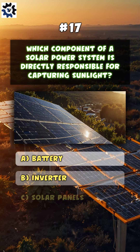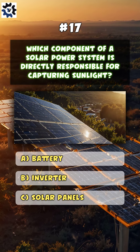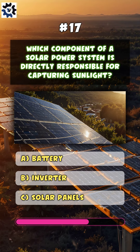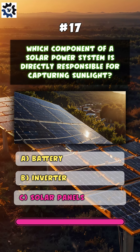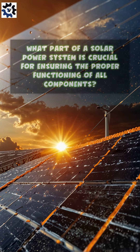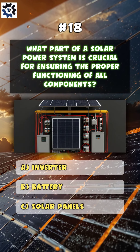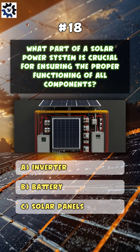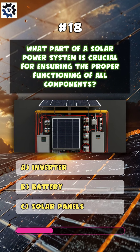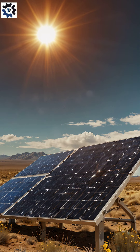Which component of a solar power system is directly responsible for capturing sunlight? What part of a solar power system is crucial for ensuring the proper functioning of all components? A. Inverter.